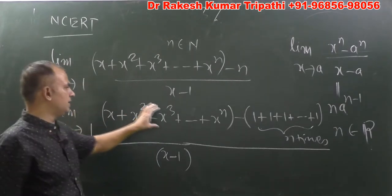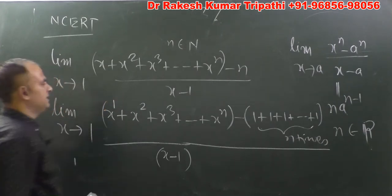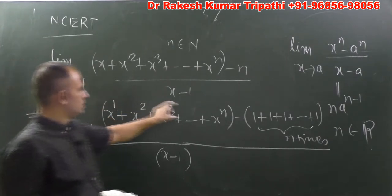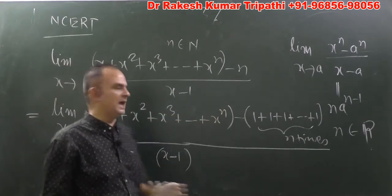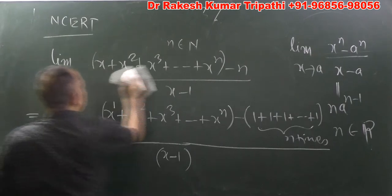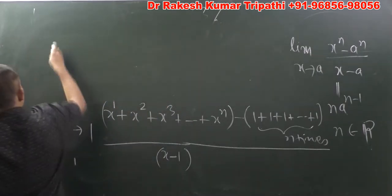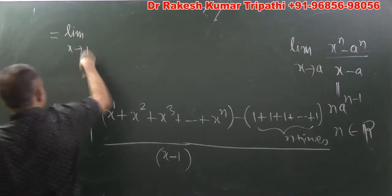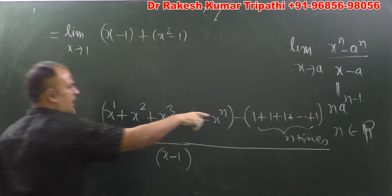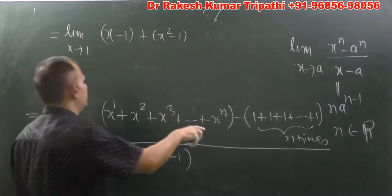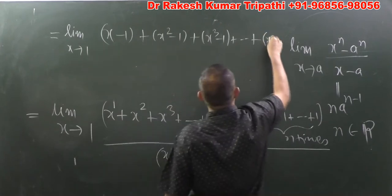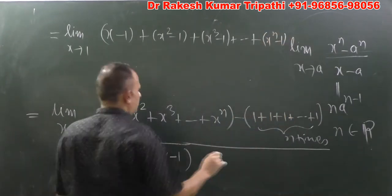The first bracket in the numerator has n terms — we know this because the powers start from 1 and end at n. Similarly, we have n ones. So we can rewrite the limit as: limit x→1 of [(x - 1) + (x² - 1) + (x³ - 1) + ... + (xⁿ - 1)] upon (x - 1), taking all the ones with all these terms, each divided by (x - 1).